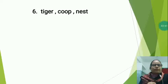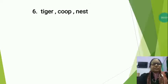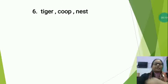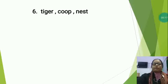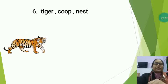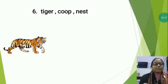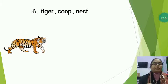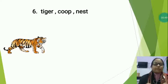Now the next set is Tiger, Coop, and Nest. Students, in this also there are three words — you will have to find which word is different and circle it. The first is tiger — a wild animal that eats the flesh of other animals. The color of the tiger is yellow with black stripes on the body. It is a very powerful wild animal that belongs to the cat family and runs very fast.